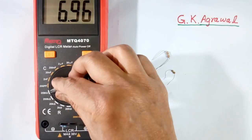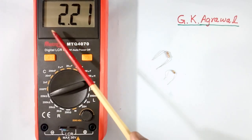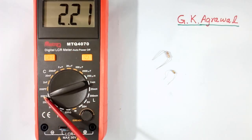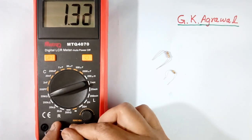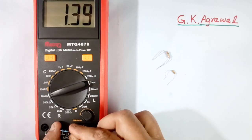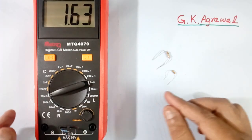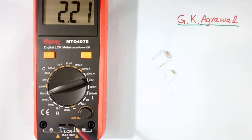Now it is reading 2.2 mega ohm. This scale is at mega ohm. Now when we measure a high value resistor, we should not touch it by hand. If you touch it by hand, body resistance will come in parallel and the resistance value will come down. This value is equal to the parallel of my body resistance and this 2.2 mega ohm resistor. If I remove my hand, it will give the correct value. So we should never touch the leads by our hand.